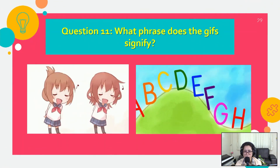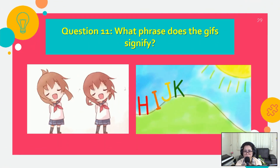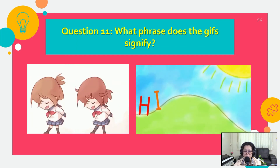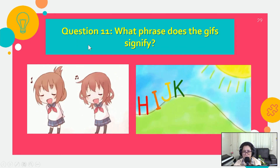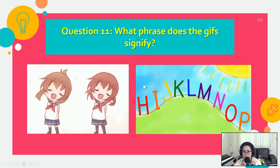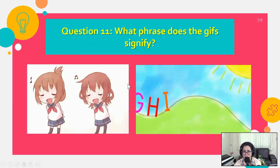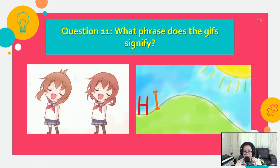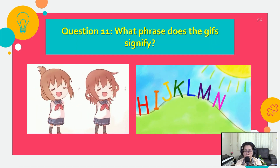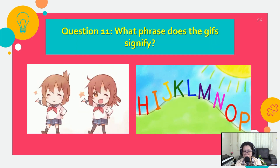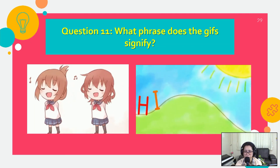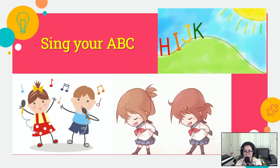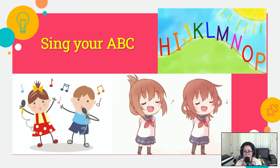Next. Last question. What phrase do the GIFs signify? The moving pictures you can see are called GIFs — G-I-F-S. Five seconds. One, two, three, four, five. Answer. The answer is 'sing your ABC.' Sing your ABC.